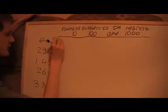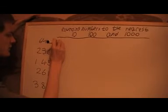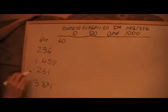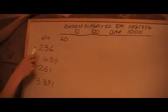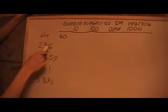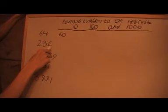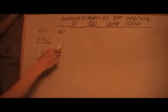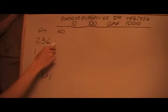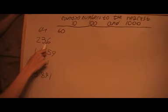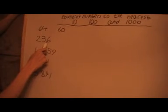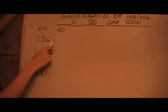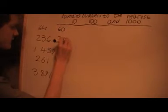Because this is a four, round down to 60. Now for 236 to the nearest ten, look at the units digit again, which is six. Because it's six, round it up to 240.